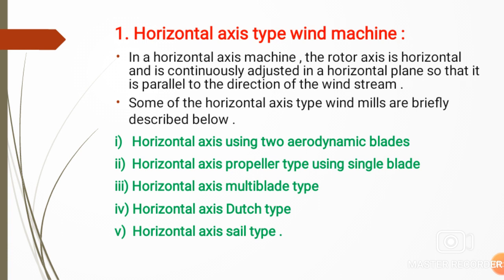The rotor is a very important part of the wind machine. Generally, the rotor consists of two parts: the blades and the hub. The hub is the part present in between the blades — the blade is attached to the hub. In this video, we will discuss the horizontal axis type wind machine, and after that we will discuss the vertical axis type wind machines.